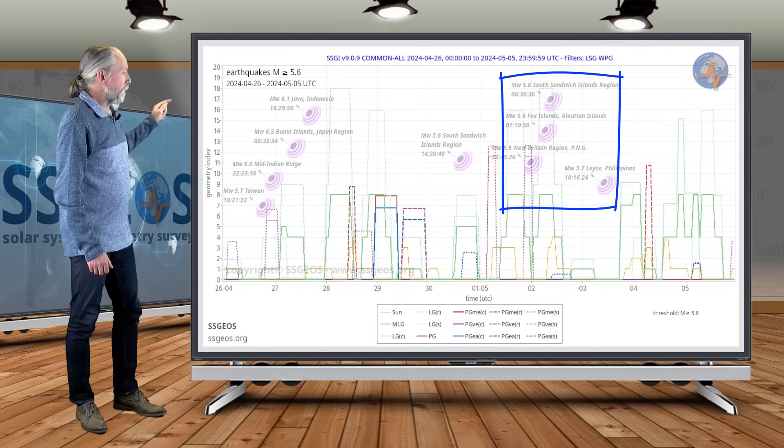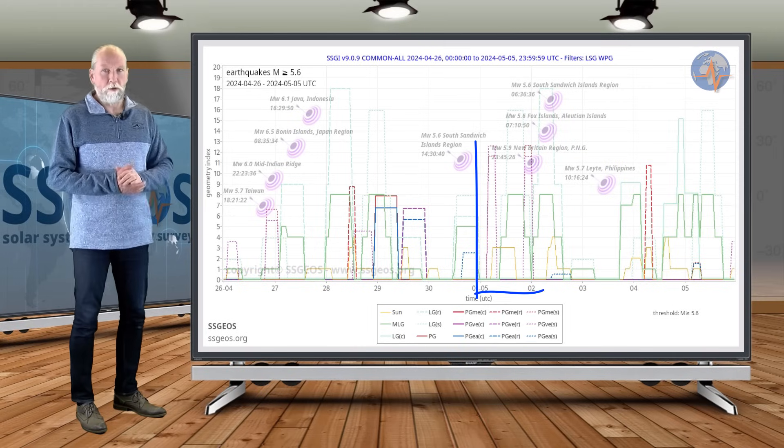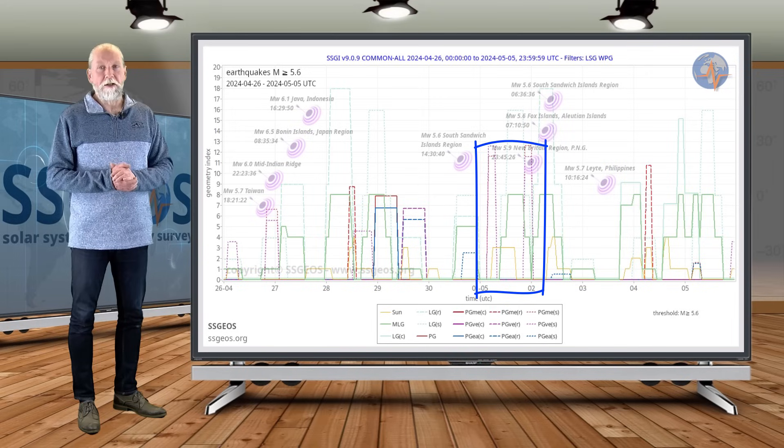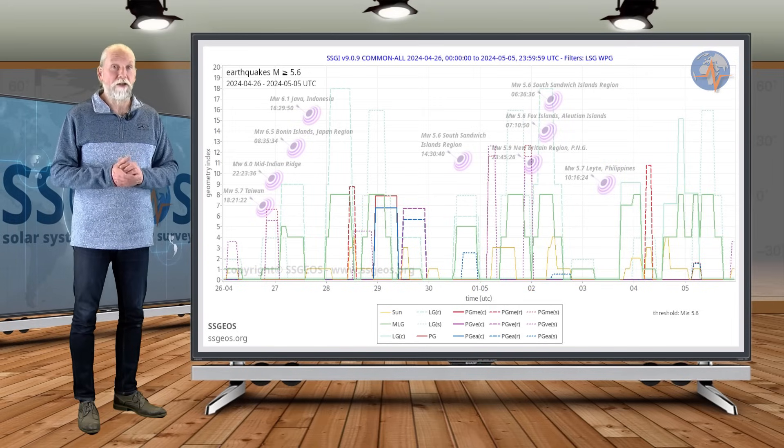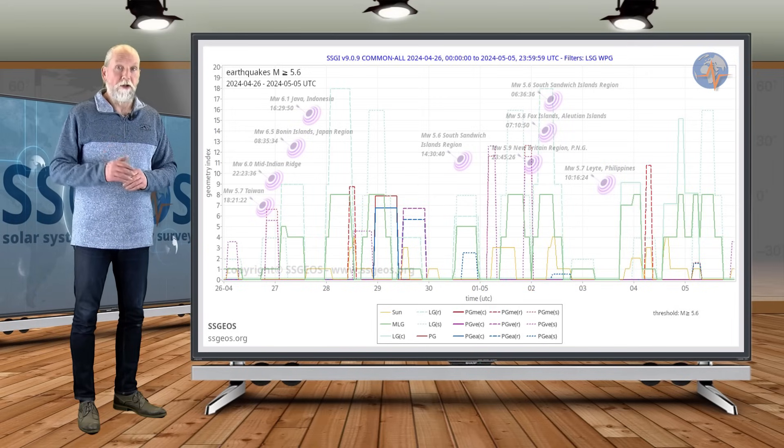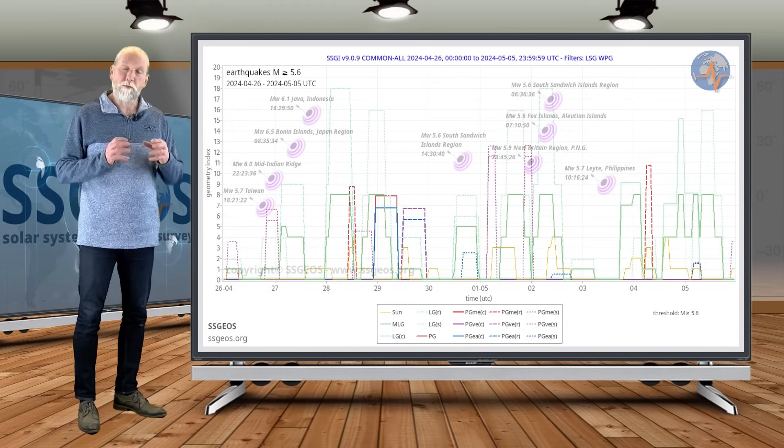That is because of the semi-right angle geometry with Mercury and Venus. I did a detailed analysis of that geometry in the previous update—you may want to look that up. It's very interesting because Mercury and Venus in combination with an outer planet with critical geometry...